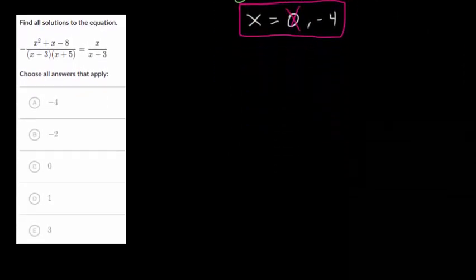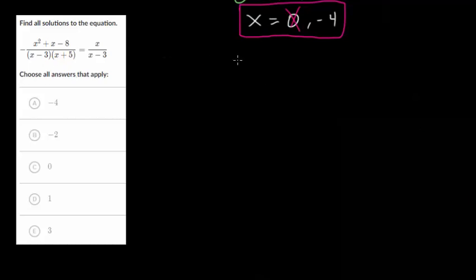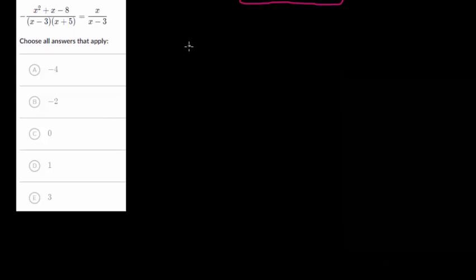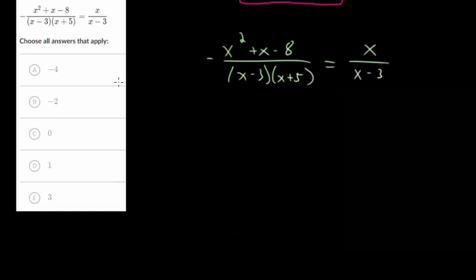Let's do one last problem. This one's a bit complicated looking - we've got this quadratic expression up here, but it's going to work the exact same way. We have x squared plus x minus 8, all divided by x minus 3 times x plus 5, and all this is negative. This equals x over x minus 3. Immediately, we know that x cannot be 3 here and it cannot be negative 5 here.